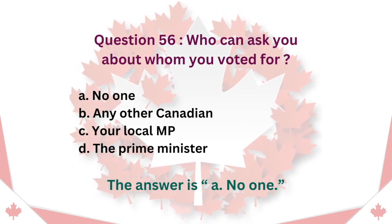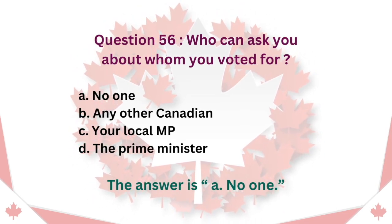Question 57: Who can ask you about whom you voted for? A. No one. B. Any other Canadian. C. Your local MP. D. The Prime Minister. The answer is A. No one.